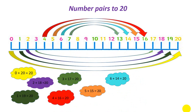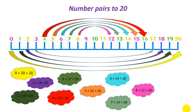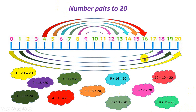Continuing: 6 and 14, 7 and 13, 8 plus 12, and 9 plus 11 is equal to 20. Now you see only 10 is left, and there is no other number to make a pair with, so I am going to add 10 to it — 10 plus 10 is going to be 20. So these are all the number pairs for 20. Now let's see how we are going to find the four facts.